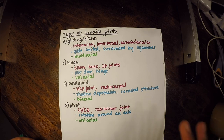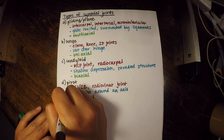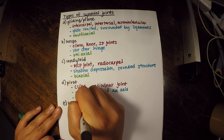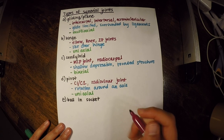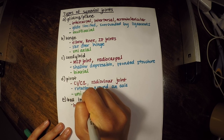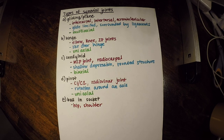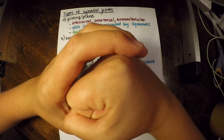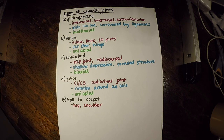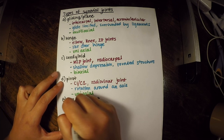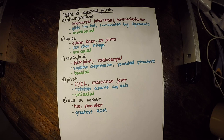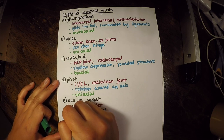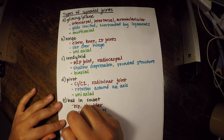Our next synovial joint type is the ball and socket joint. Examples include the hip and shoulder — a ball fits into a socket and moves within it. These joints have the greatest range of motion and are multiaxial, meaning they can move in multiple axes.